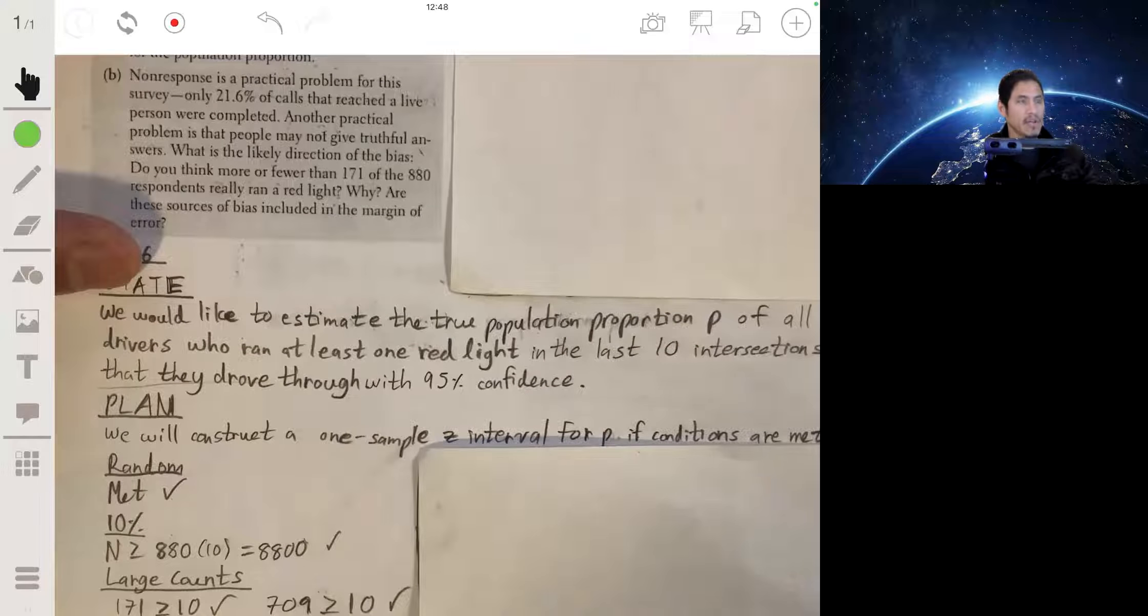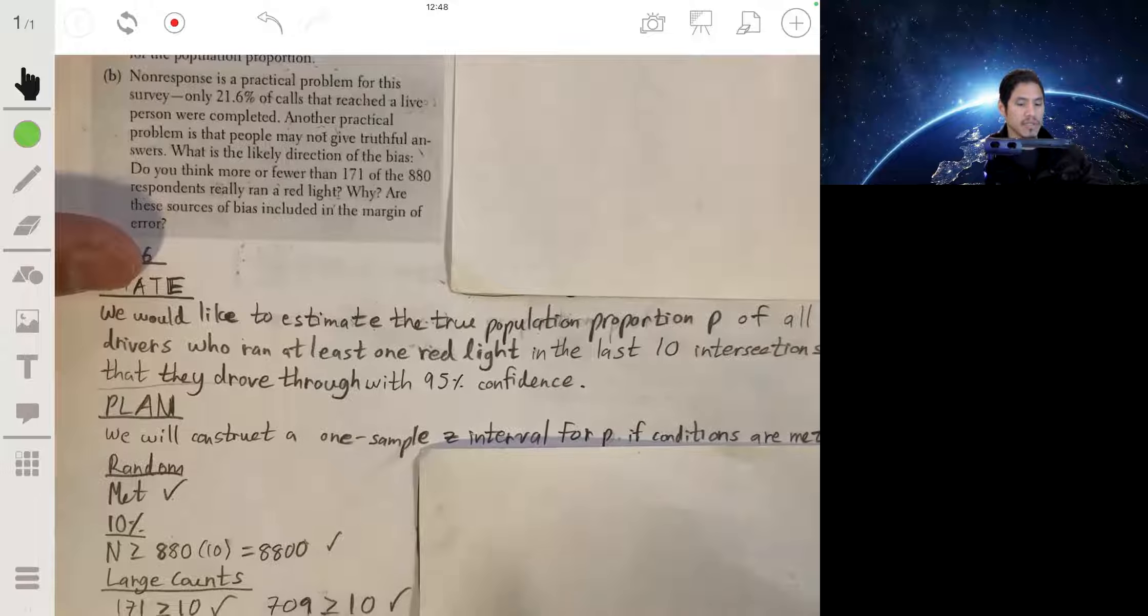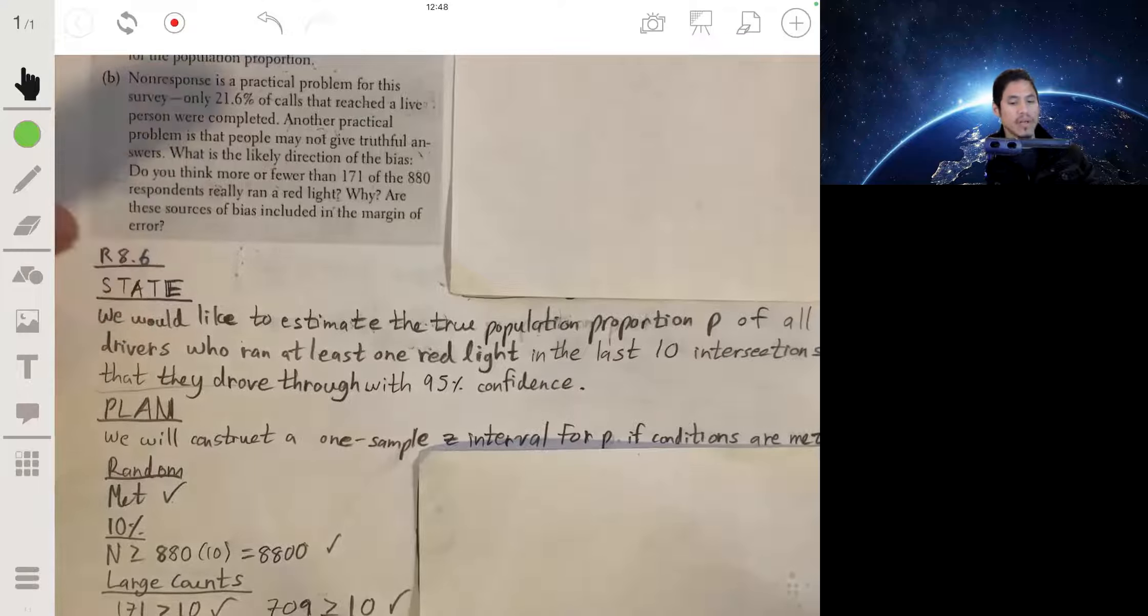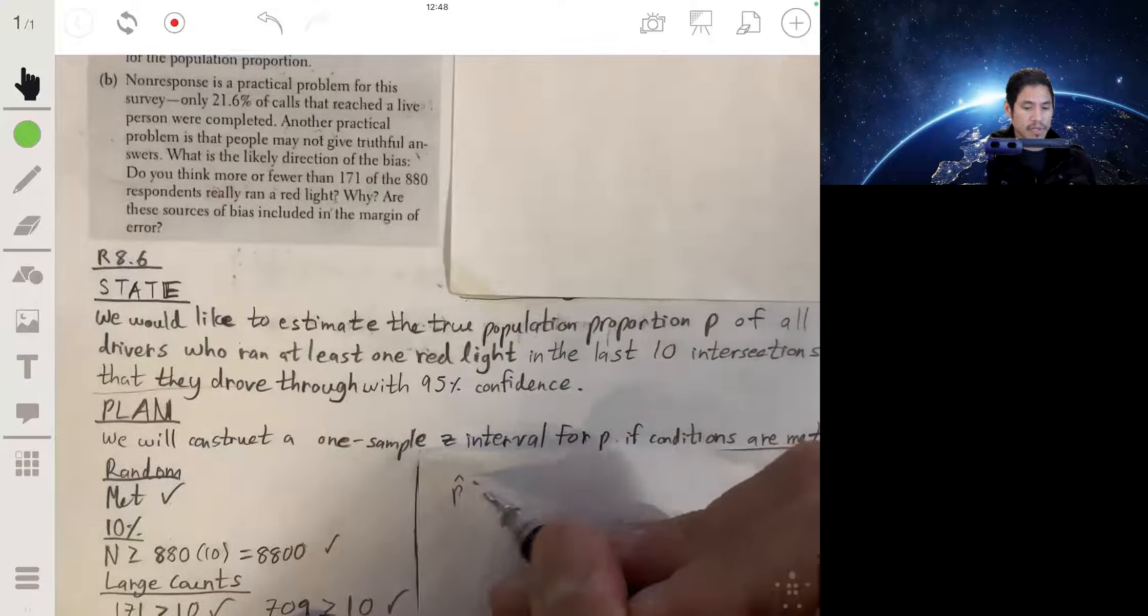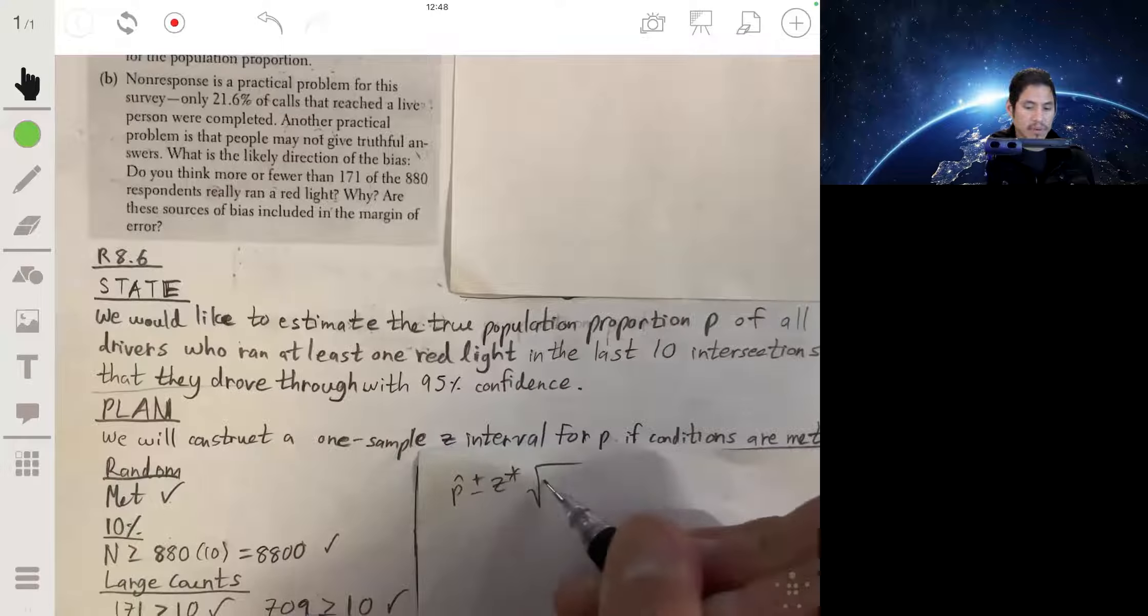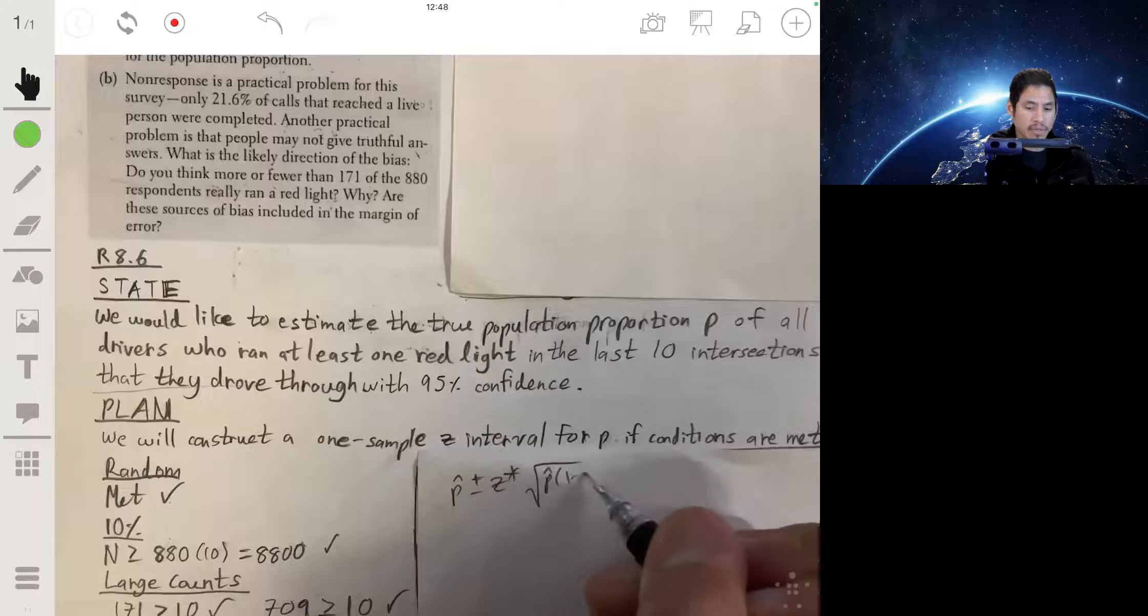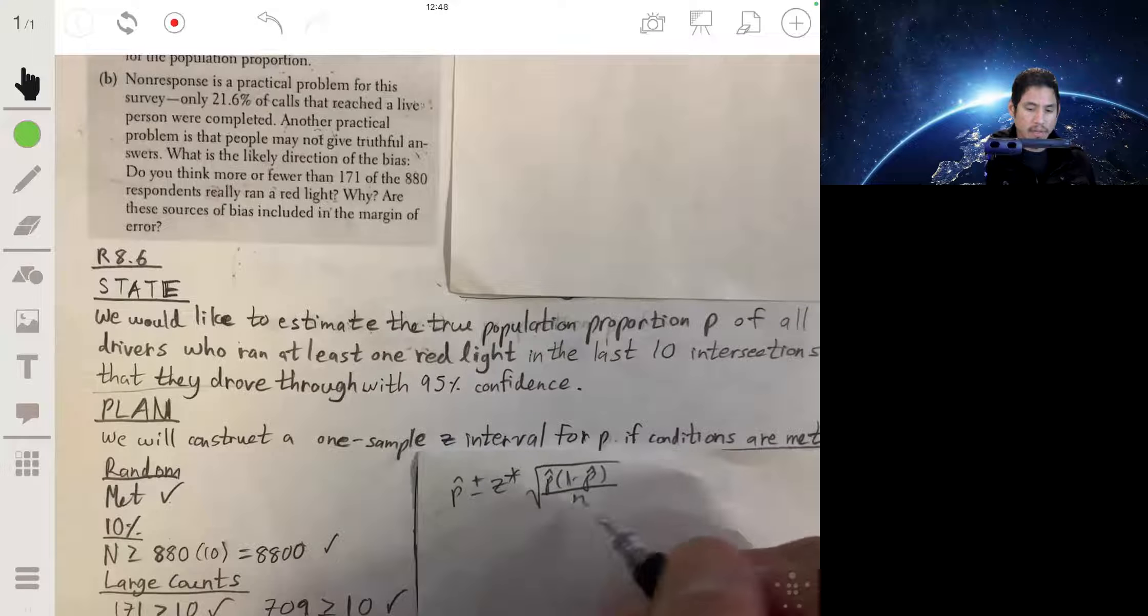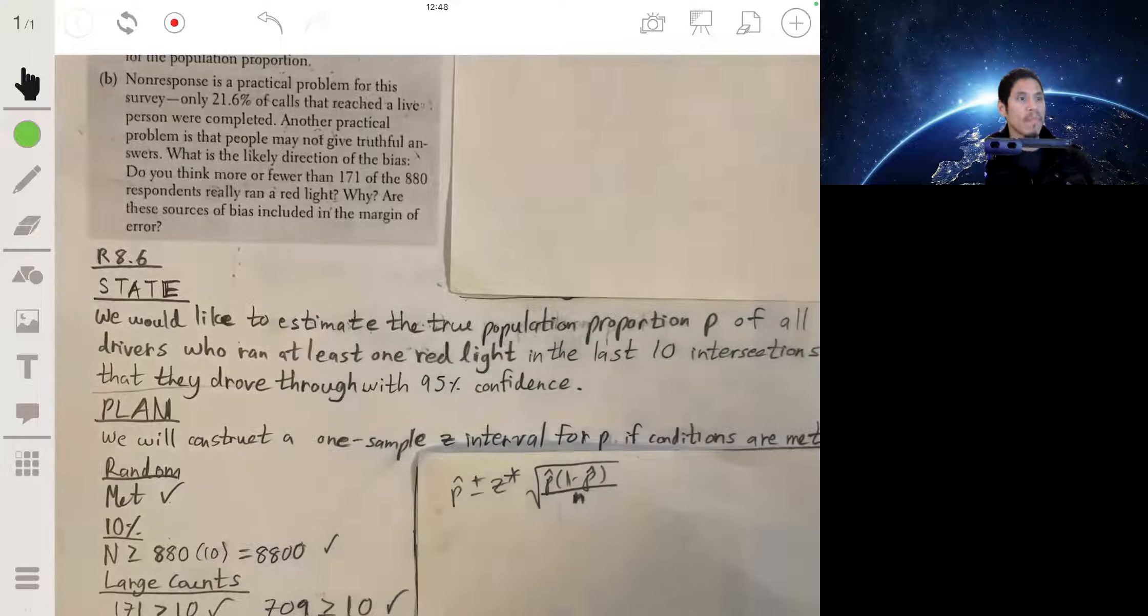Okay, now then we go ahead and make our confidence interval and construct it. So we're going to use the formula: p hat plus or minus our z star times the square root of p hat times 1 minus p hat over n as our formula for the confidence interval.